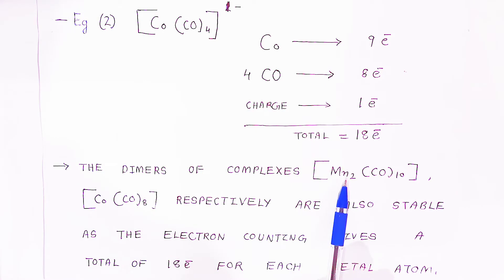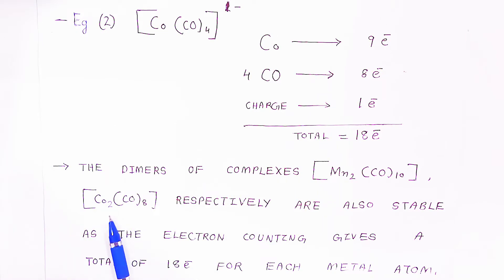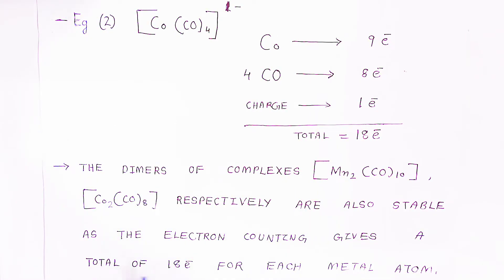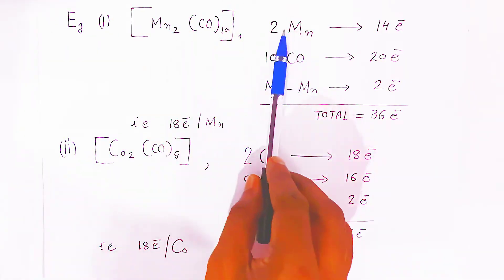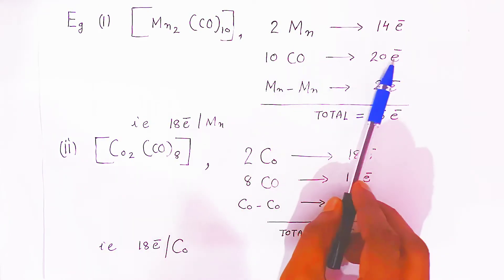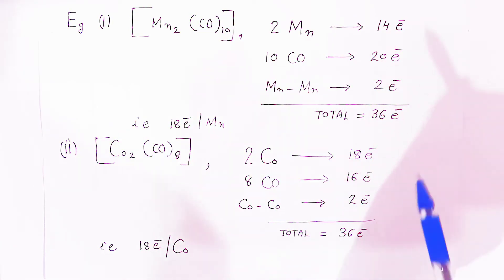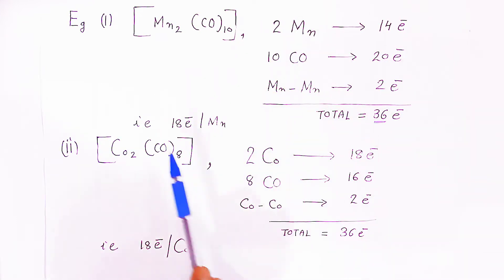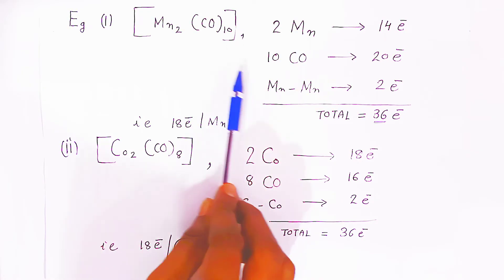The dimers of these complexes, such as Mn2(CO)10, are also stable. In Mn2(CO)10, there are 2 manganese atoms, making it a dimer. Two manganese atoms give 14 electrons, 10 carbonyl ligands provide 20 electrons, and the Mn–Mn bond contributes 2 electrons. The total is 36 electrons for 2 manganese atoms, which means 18 electrons per manganese atom. Therefore, the 18 electron rule is satisfied and these dimers are stable.